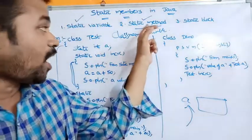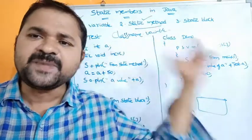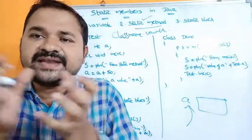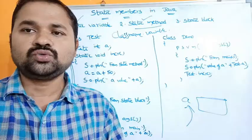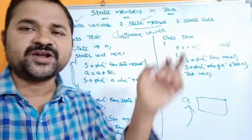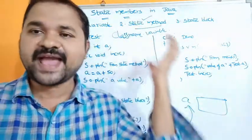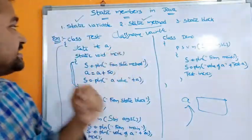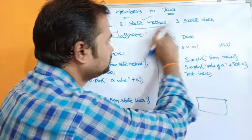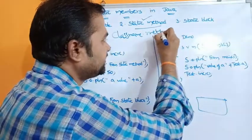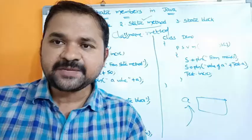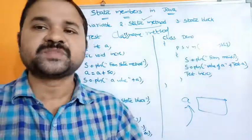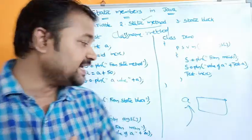Now let's see how we can access the static method. A static method is also associated with the entire class rather than individual objects. So to access a static method we follow the same syntax as for a static variable: class name dot method name.